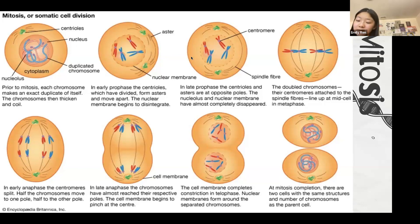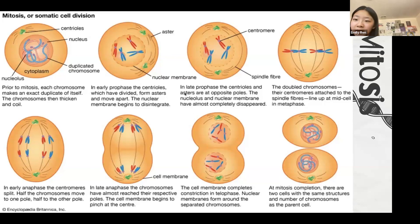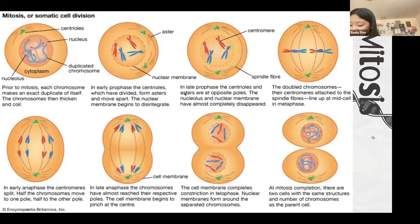Cytokinesis is cell division. Usually what happens is there's an actin contractile ring that pinches the cell and forms a cleavage furrow between the cells to cut it apart. Too much mitosis is harmful for the body — cancer is the unchecked replication of cells.